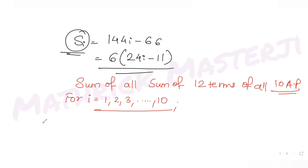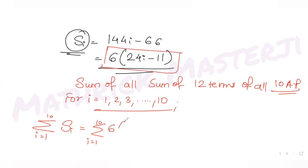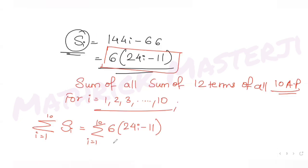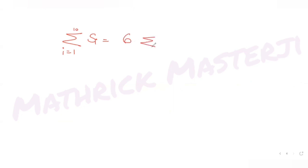Now, to find the total sum from i = 1 to 10 of S_i, we compute the summation of i = 1 to 10 of 6(24i − 11). Factoring out the 6: this equals 6 times the summation of i = 1 to 10 of (24i − 11).